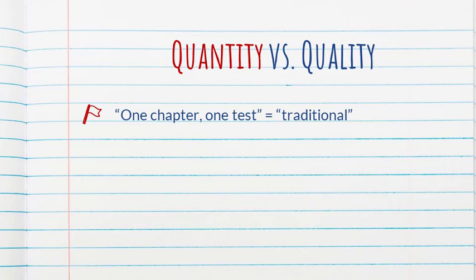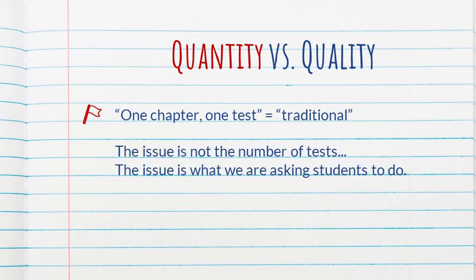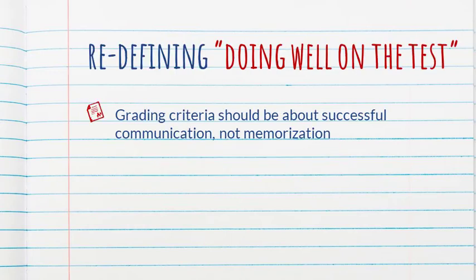On a similar note, I don't agree with the authors' implication that one test per chapter is necessarily an indication of traditional form-focused testing. It could make it harder psychologically to move away from testing whatever the textbook covered, but that's really the key issue — not the number of tests. You can have a fantastic, meaningful, purposeful test at the end of every chapter. I do fully agree with the authors that changing the grading criteria is absolutely crucial, and I agree the grading criteria should be about successful communication and not memorization.